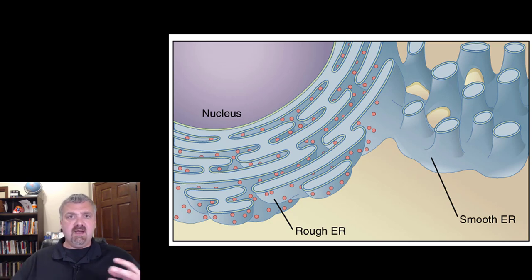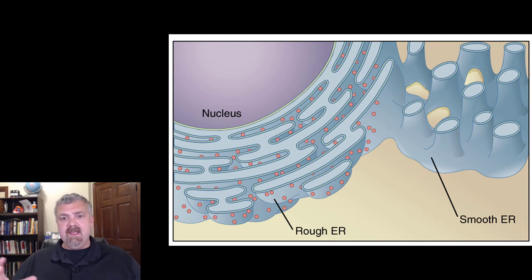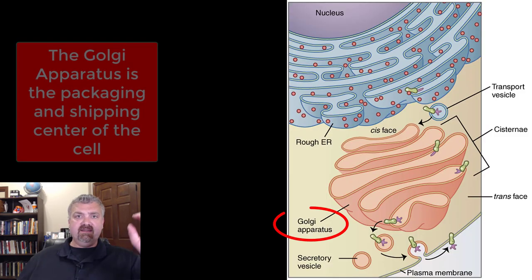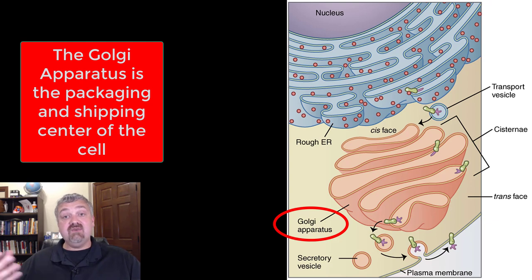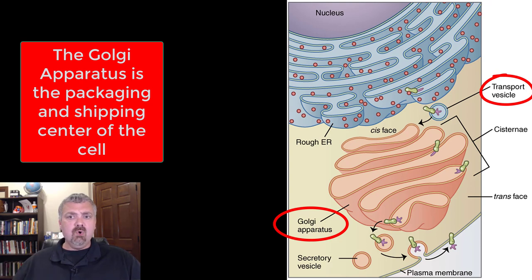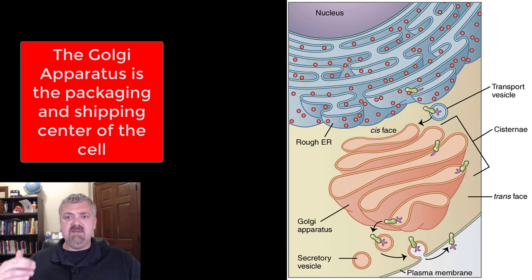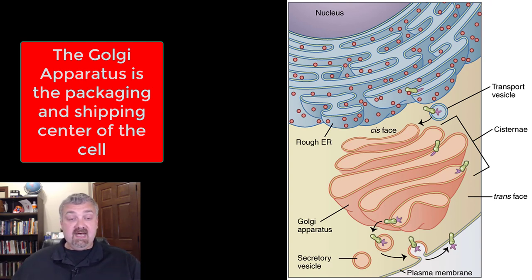So the rough ER is modifying and packaging proteins, the smooth ER is adding cholesterol, phospholipids, and hormones, and then the materials produced in the endoplasmic reticulum move into the Golgi. At the top you see the nucleus, then the rough ER — and the smooth ER has been inserting material too. The rough ER takes these modified proteins and transports them through transport vesicles to the Golgi apparatus or Golgi complex. The cis-face is where material is incoming, and as it travels through the Golgi, it gets tagged and prepared for transport to its final destination.